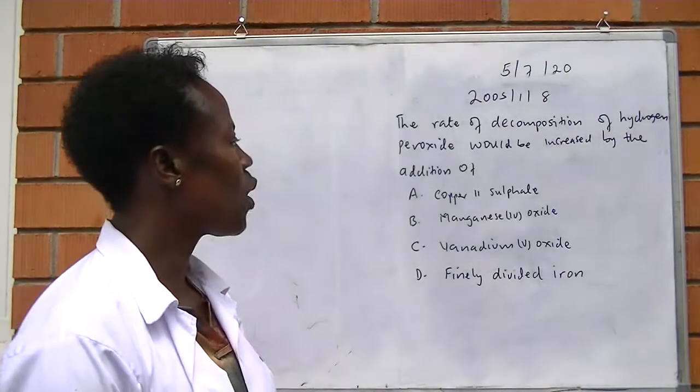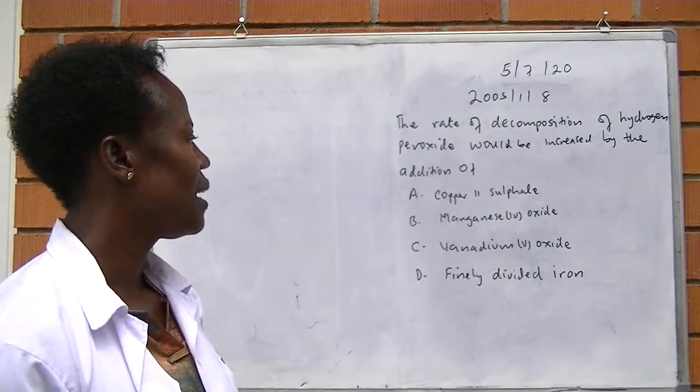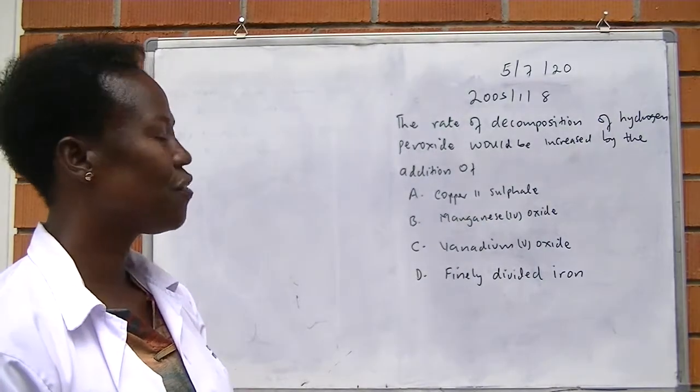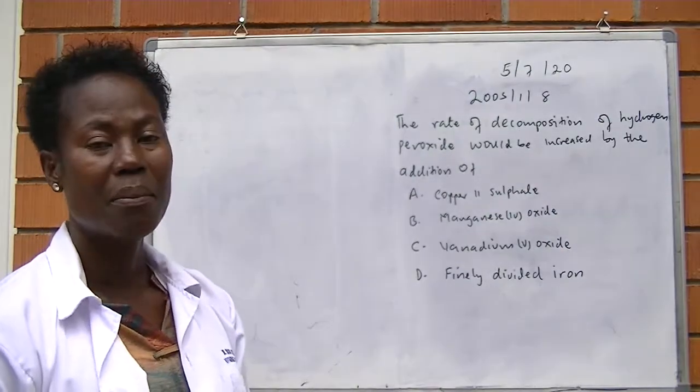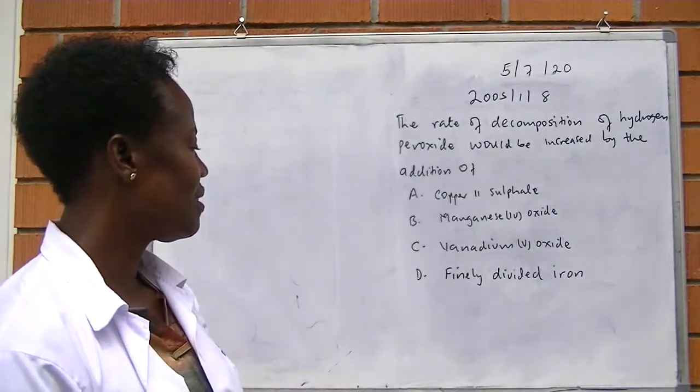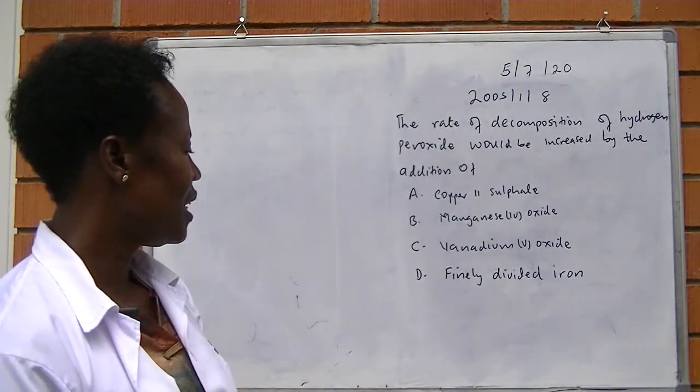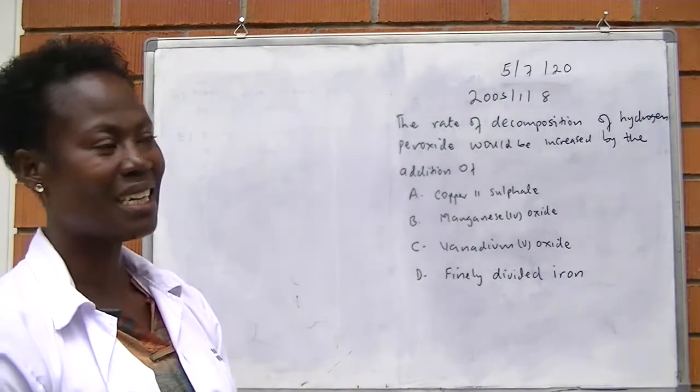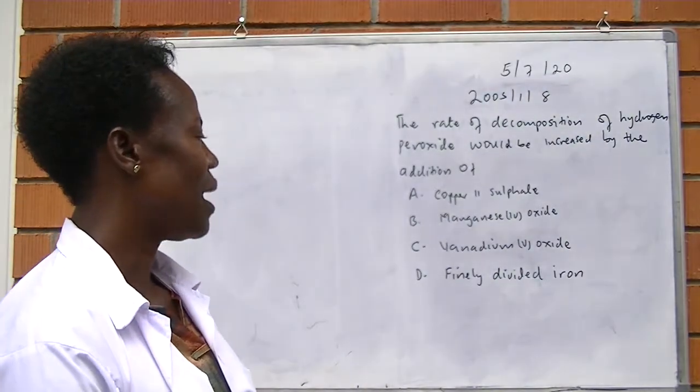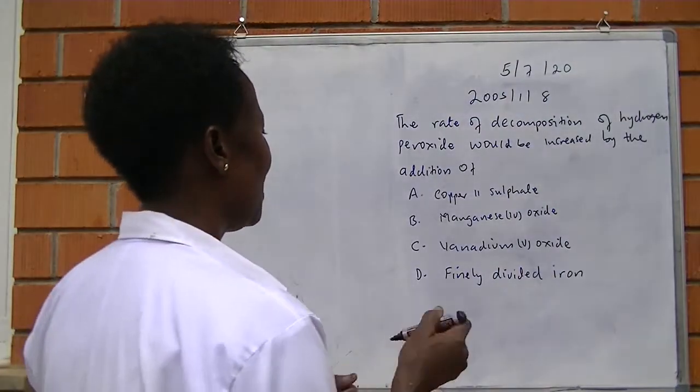The rate of decomposition of hydrogen peroxide will be increased by the addition of A, copper(II) sulfate, B, manganese(IV) oxide, C, vanadium pentoxide, D, finely divided iron. I think you remember the catalyst. Manganese(IV) oxide. The answer is B.